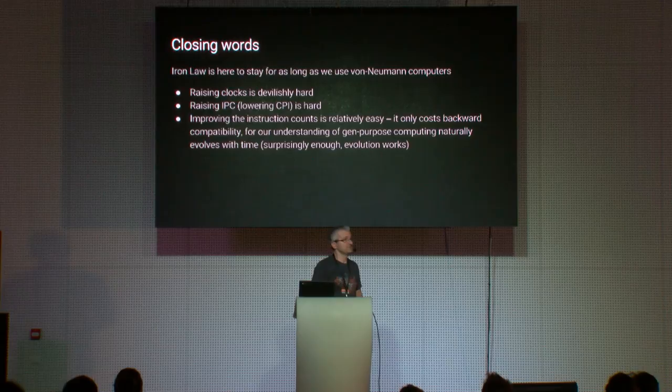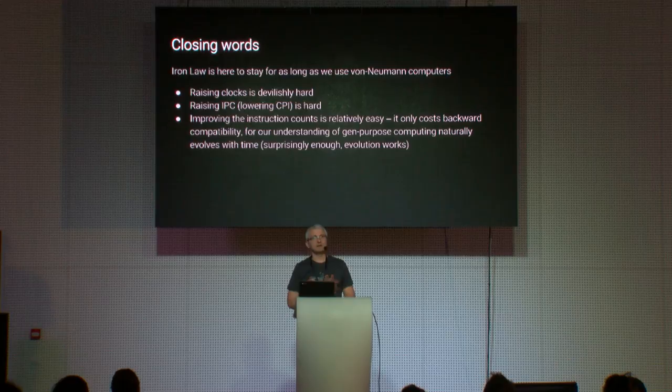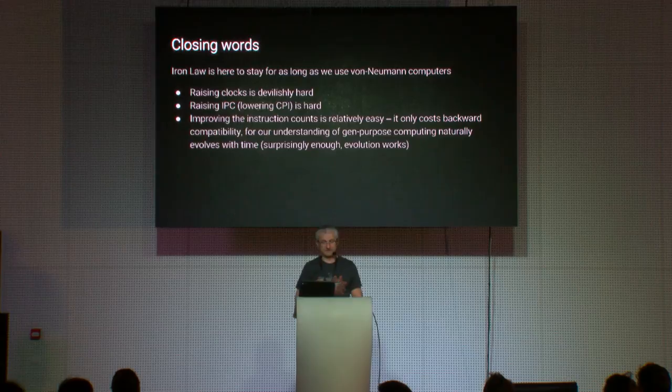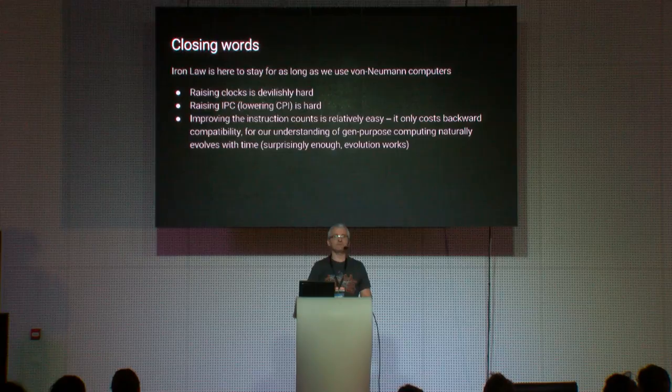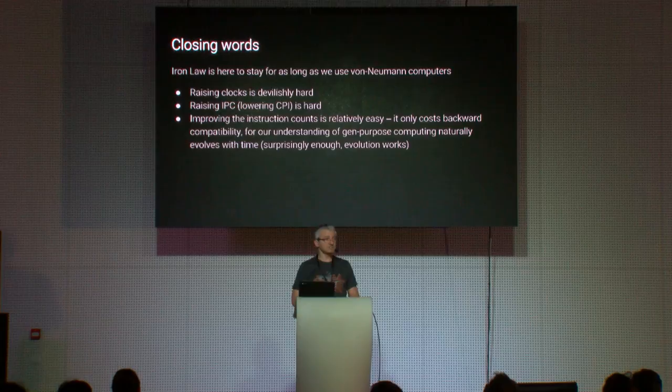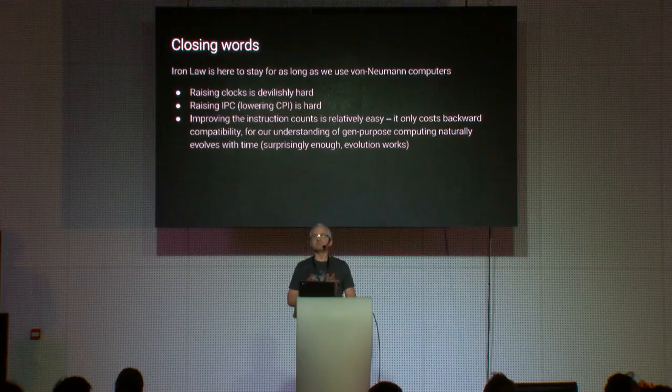Closing words: the Iron Law of computing performance is not going anywhere as long as we use von Neumann computers, so we must take it into account whether we like it or not. Improving clocks is devilishly hard — we have pretty much reached the ceiling there. Raising instructions per clock is still very hard. What is considerably less hard is producing ISAs that are much smarter and fitter to today's general purpose computing than ISAs have been in the past.